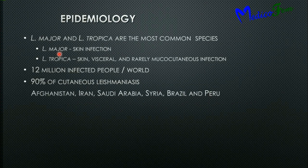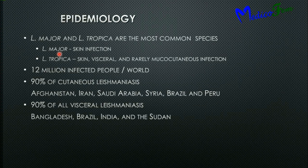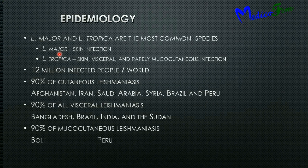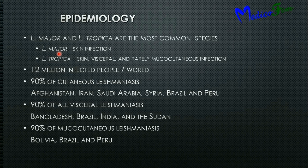Worldwide, 12 million people are infected. 90% of cutaneous leishmaniasis cases come from Afghanistan, Iran, Saudi Arabia, Syria, Brazil, and Peru. 90% of all visceral leishmaniasis cases come from Bangladesh, Brazil, India, and Sudan. And 90% of mucocutaneous leishmaniasis belongs to Bolivia, Brazil, and Peru.